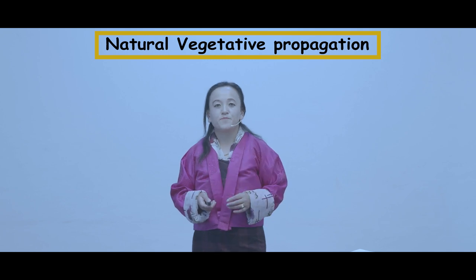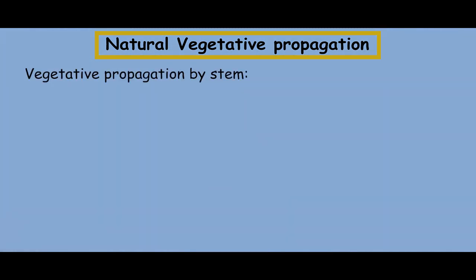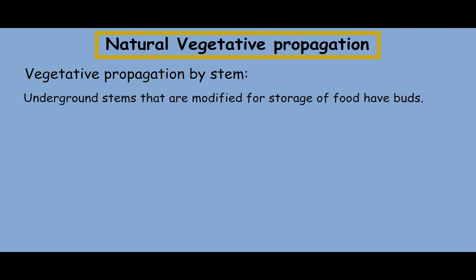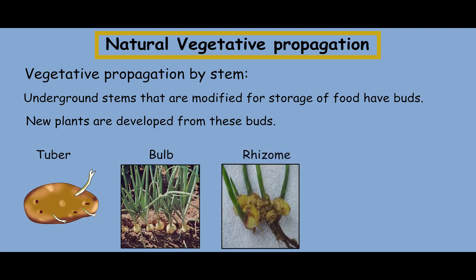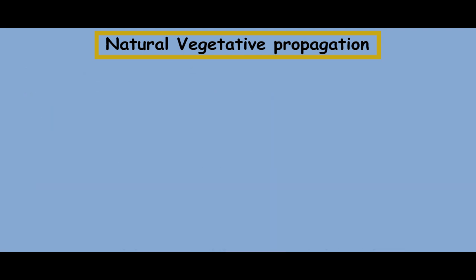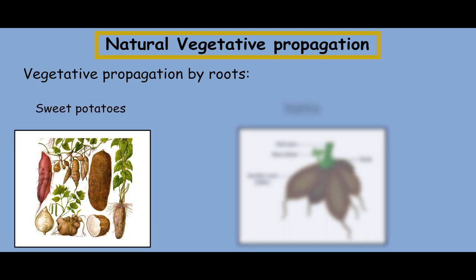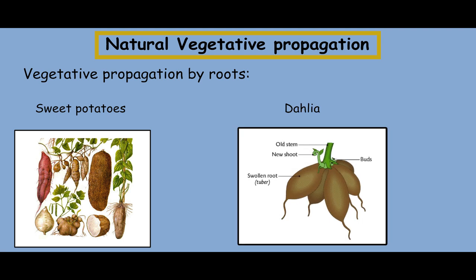In this lesson, we will focus on natural vegetative propagation. Vegetative propagation through stems: underground stems modified for food storage have buds, and new plants develop from these buds. Modified stems like tubers, bulbs, rhizomes, and runners help the plant to multiply. Vegetative propagation through roots: the roots also help in vegetative propagation — examples include sweet potato and dahlia, which give rise to new plants from their fleshy roots.